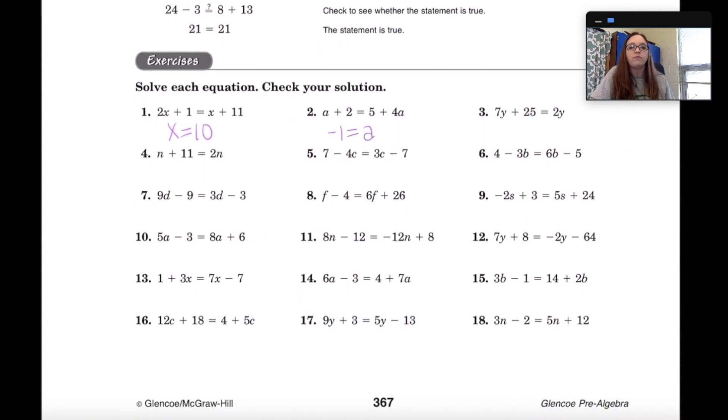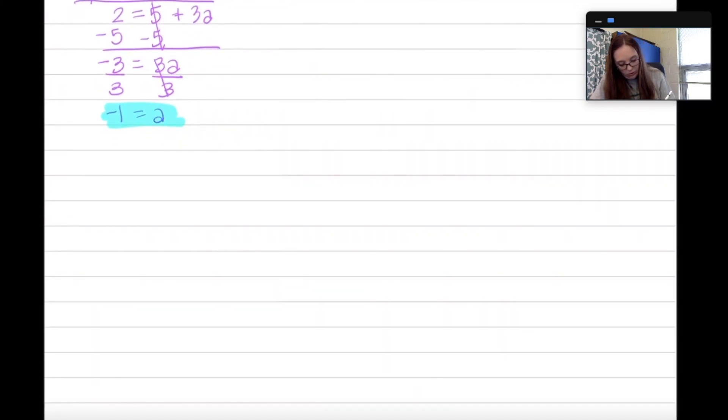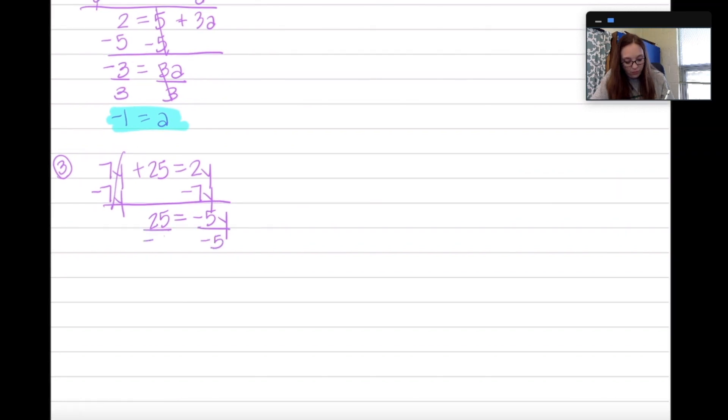Let's try problem 3. So 7Y plus 25 equals 2Y. Again, I'm going to start off by seeing are there like terms on the left that can be combined? No, those can't be combined. On the right side, I only have the 2Y, so there's nothing I can do there. Now my options are I got to get my variables on the same side. So I can either subtract 7Y on both sides or I can subtract 2Y on both sides. For this one, it'll be easier to subtract the 7Y. So that leaves me with 25 equals negative 5Y. Now all we got to do is divide both sides by negative 5. So negative 5 equals Y. I'm going to go back to my front page and write that down.